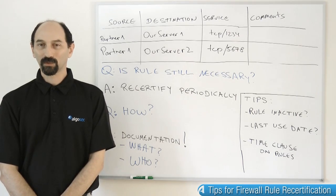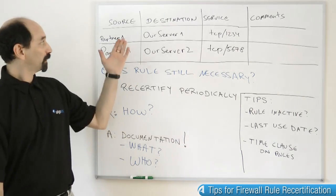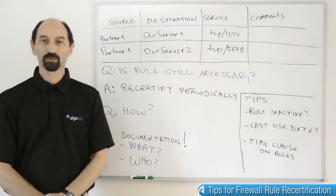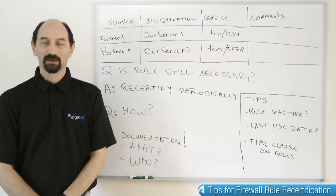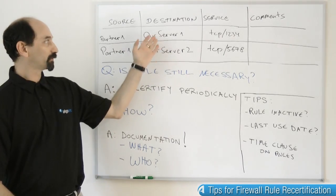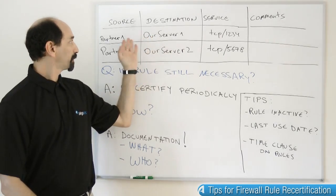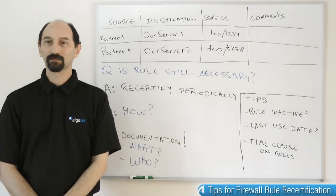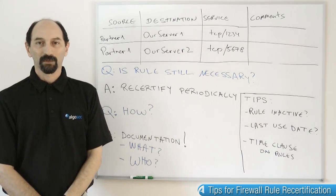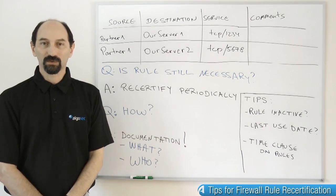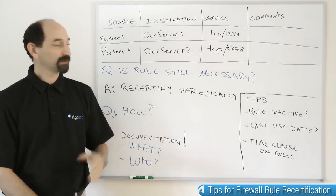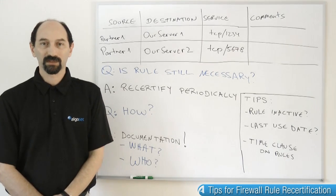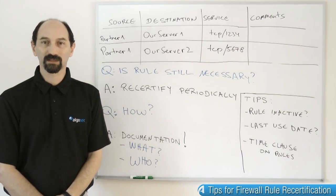So what are we talking about here? Well, in your firewall you have rules that allow traffic from one place to another using some protocols and ports, and you want to ask yourself occasionally: is that traffic still necessary? Is that rule still necessary?